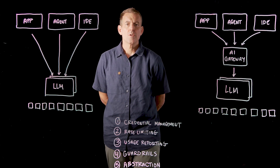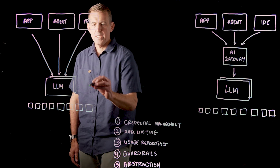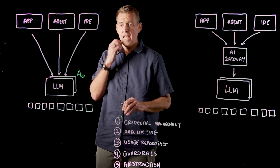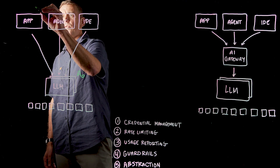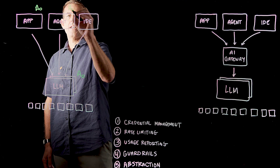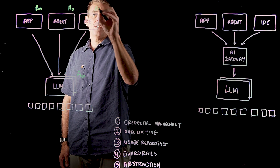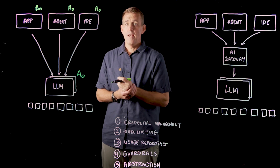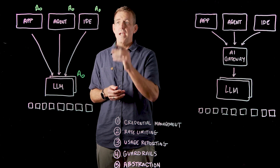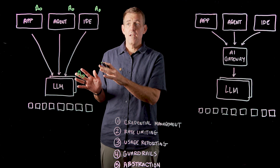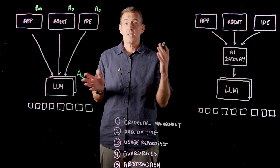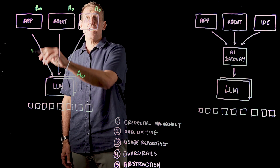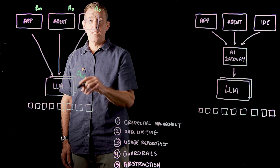The first use case involves credential management. Without an AI gateway, a very common pattern is that I'll create a key in my LLM provider, take that key, and distribute it to the application teams, teams writing agents, and anyone using an agentic IDE who also needs an API key. Functionally this works. The problem is when any developer who has seen that key leaves the company or accidentally checks it into a public GitHub repository. The blast radius of that is this entire infrastructure, including your account in the LLM provider.